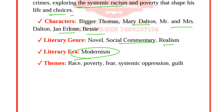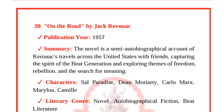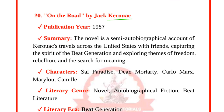On The Road by Jack Kerouac was published in 1957. The novel is a semi-autobiographical account of Kerouac's travels across the United States, capturing the spirit of the Beat Generation. Themes include freedom, rebellion, and the search for meaning.